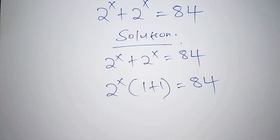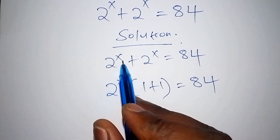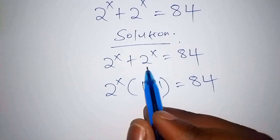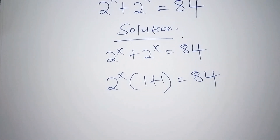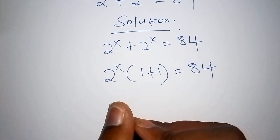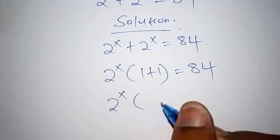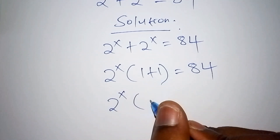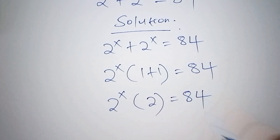Simply because when you open the bracket, you shall arrive at 2 to the power of x plus 2 to the power of x. So we shall work out the number inside the bracket: 2 to the power of x times (1 plus 1) is 2, equals 84.